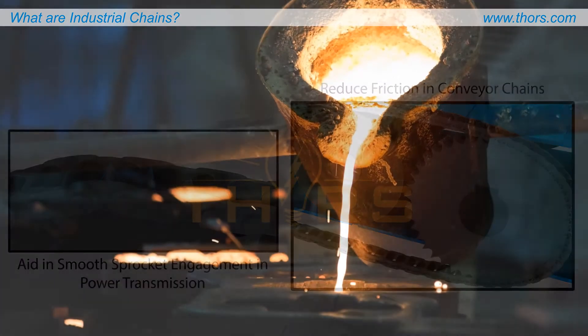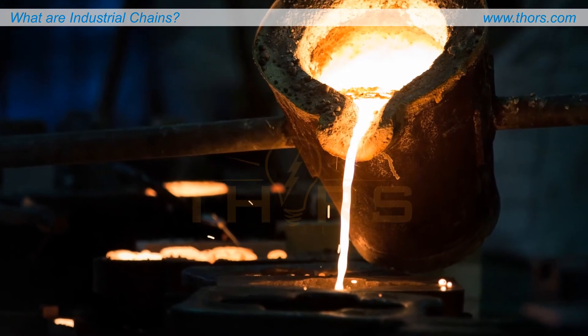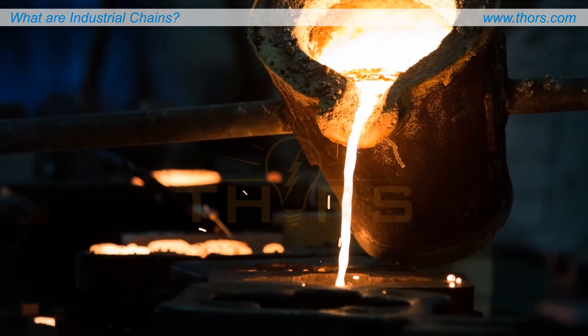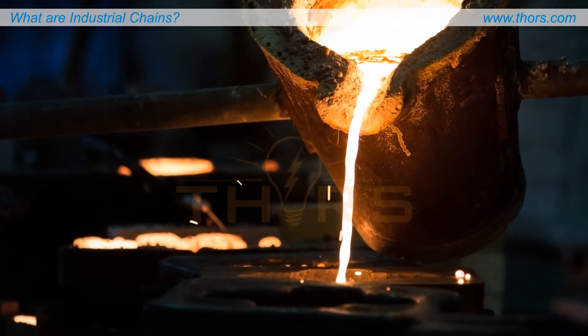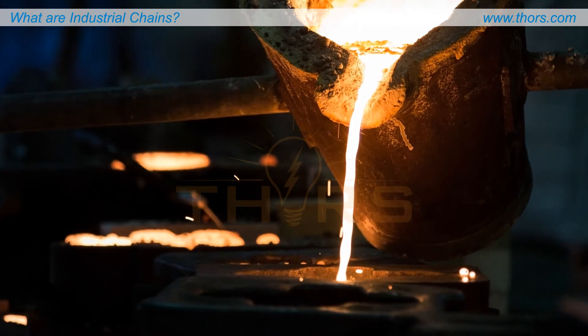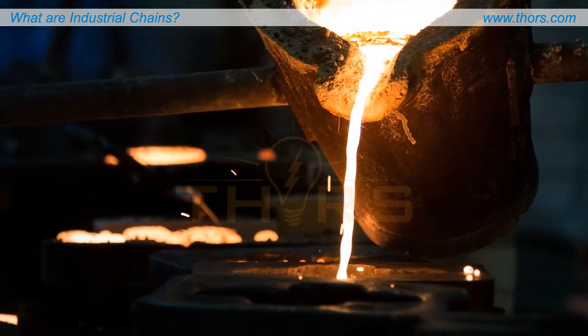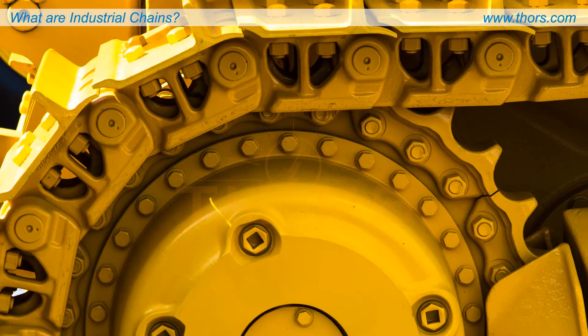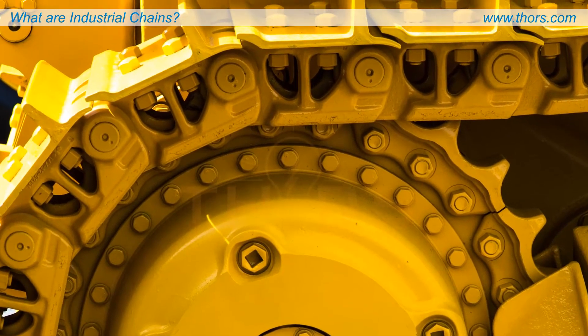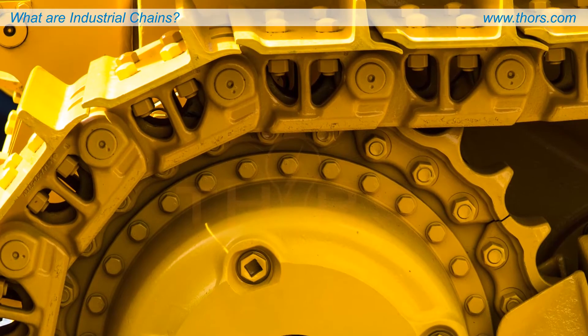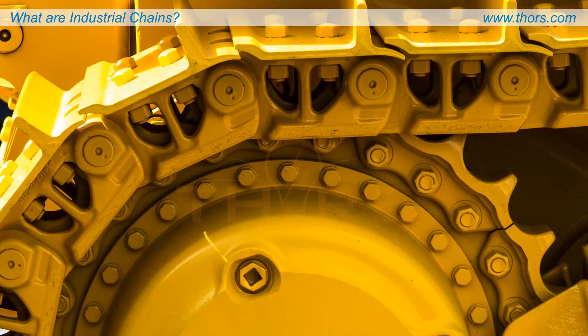Some chains are cast, in which molten metal is poured into molds of a specific size, shape, and design. This method is generally used for large or thick chains, or for those with irregular shapes.